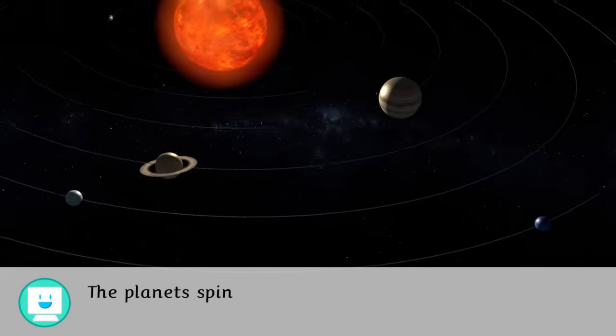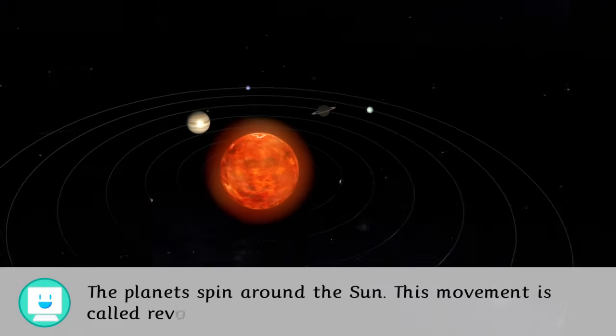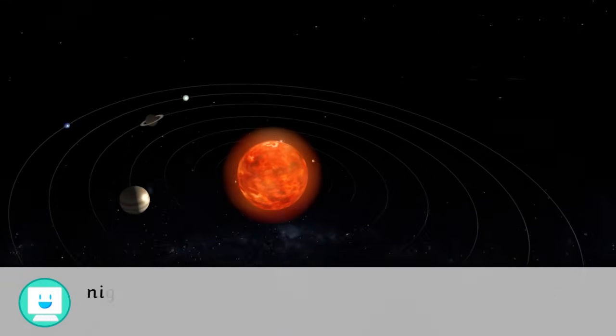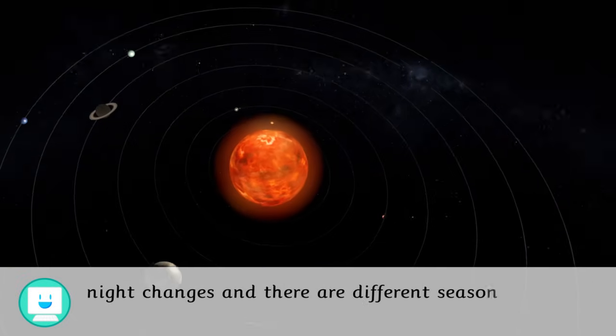The planets spin around the Sun. This movement is called revolution. Thanks to that, the length of day and night changes and there are different seasons.